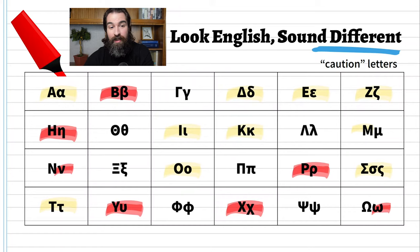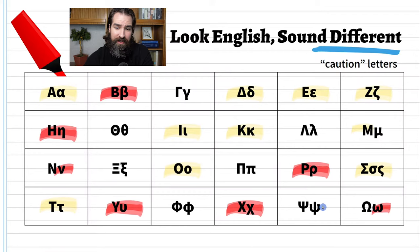So we have to be aware: some letters we can trust our gut on — all the ones in yellow. And all the ones in red, we have to pause and think: this isn't going to sound like it does in English.